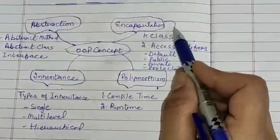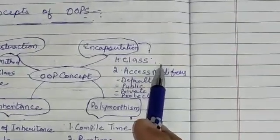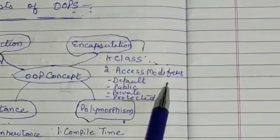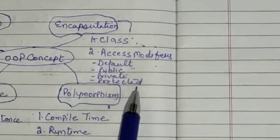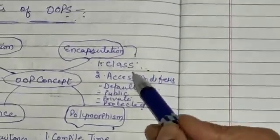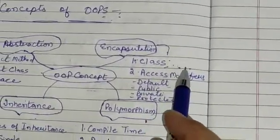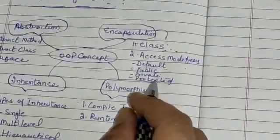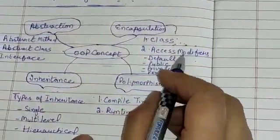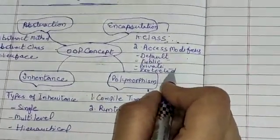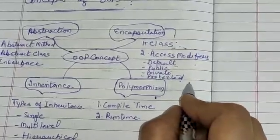Encapsulation consists of — as you can see in the video — class, and access modifiers like default, public, private, and protected. I will discuss class and object in detail in the next lecture. At the end, I want to say that object oriented programming is a programming paradigm, or you can say it is a style which consists of objects and classes.